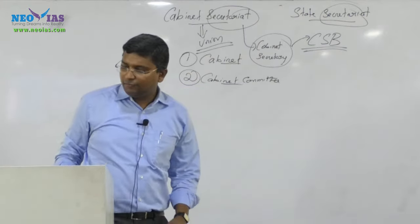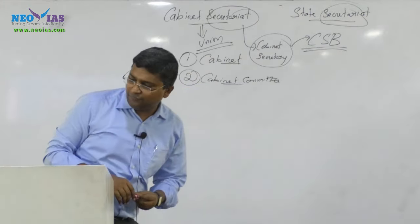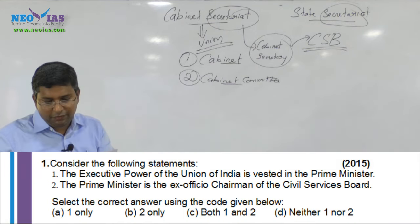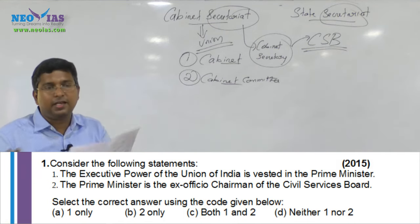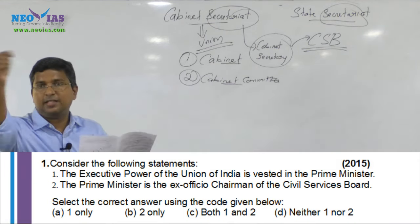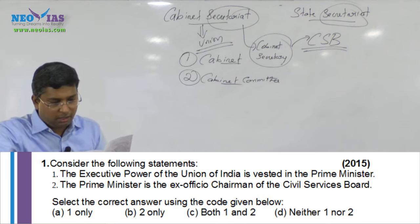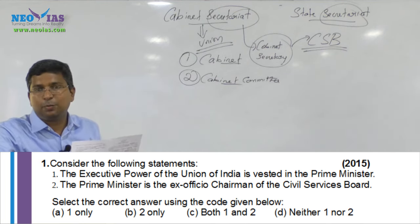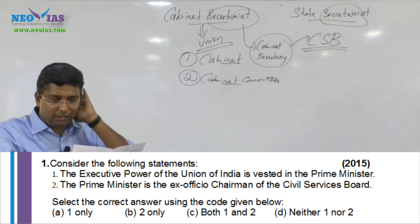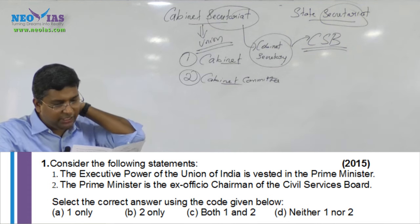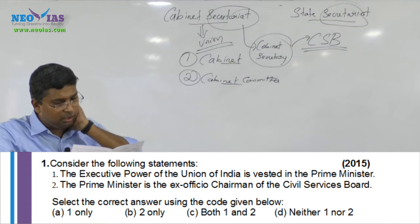Regarding the 2015 UPSC question: the first statement — 'the executive power of the Union of India is vested in the President' — that statement is wrong. The second statement — 'the Prime Minister is the ex officio chairman of the Civil Services Board' — who is the ex officio chairman? It is the cabinet secretary, not the prime minister. So both statements are wrong.